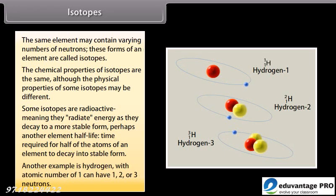Another example is hydrogen with atomic number of 1 can have 1, 2 or 3 neutrons.